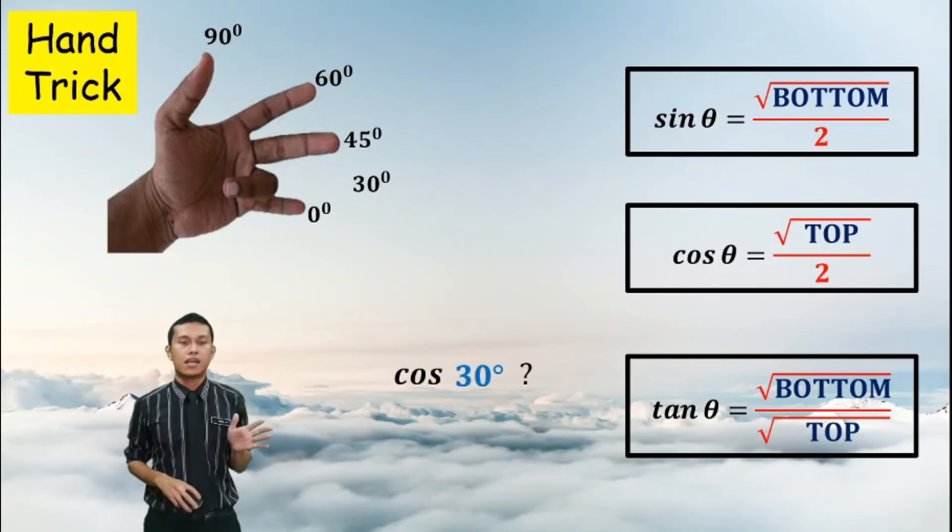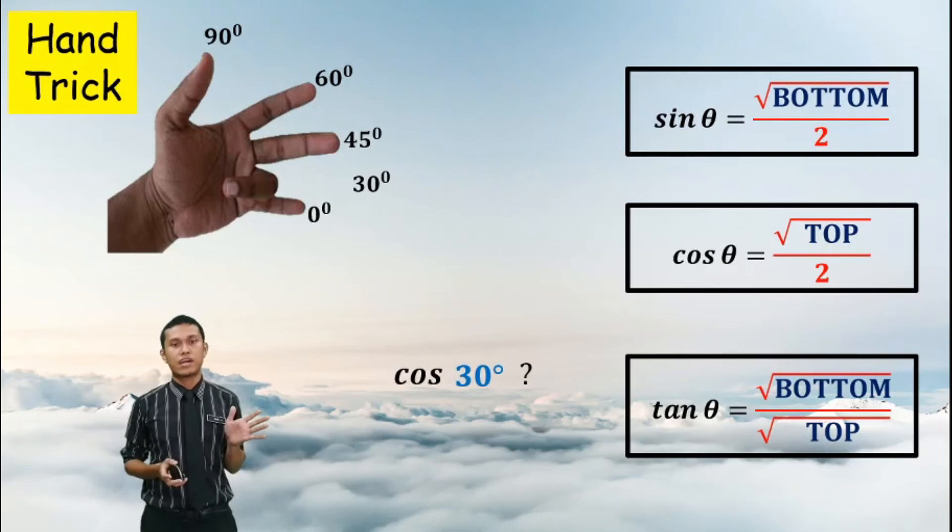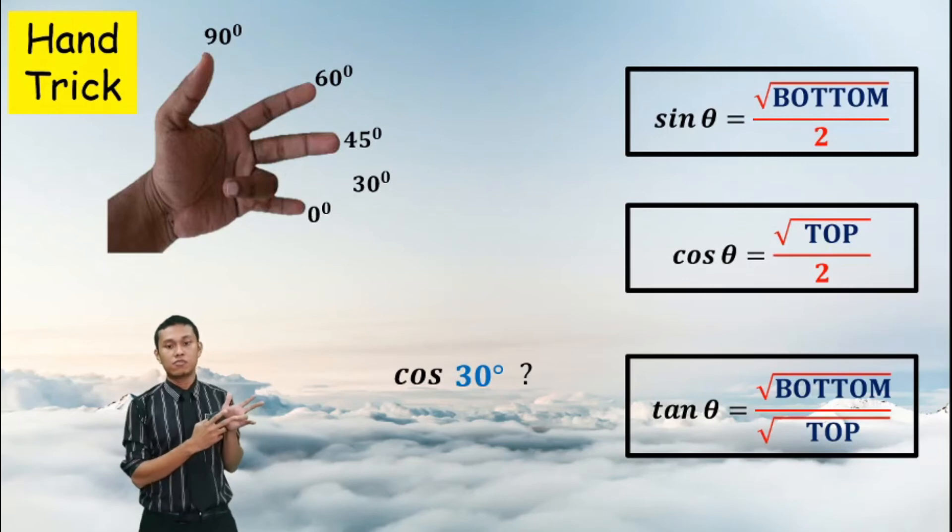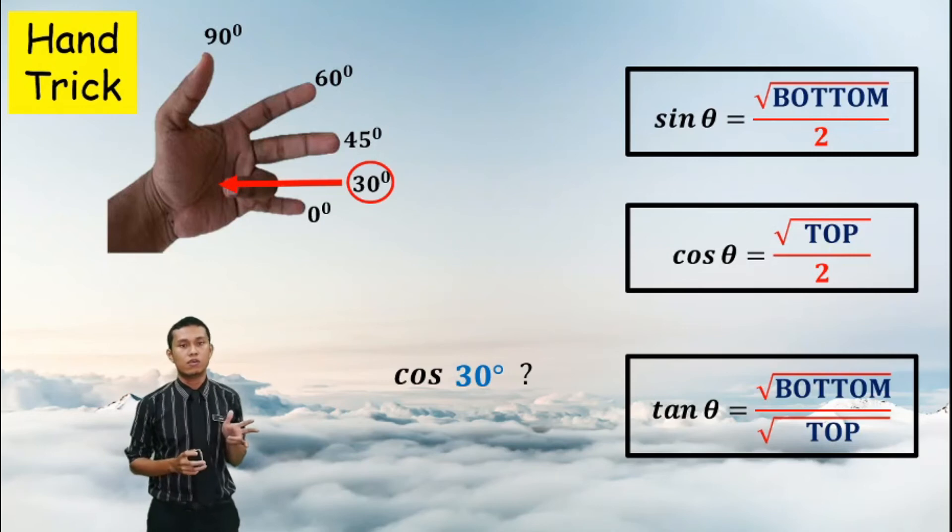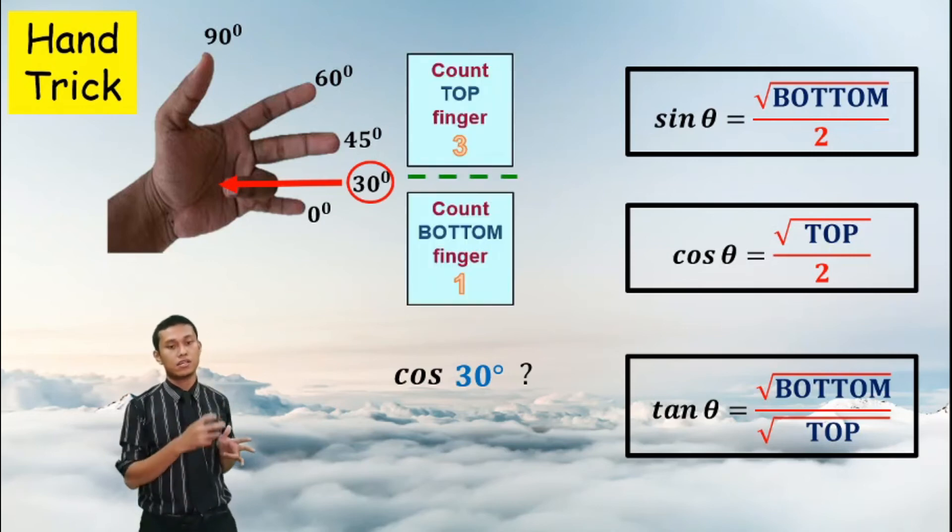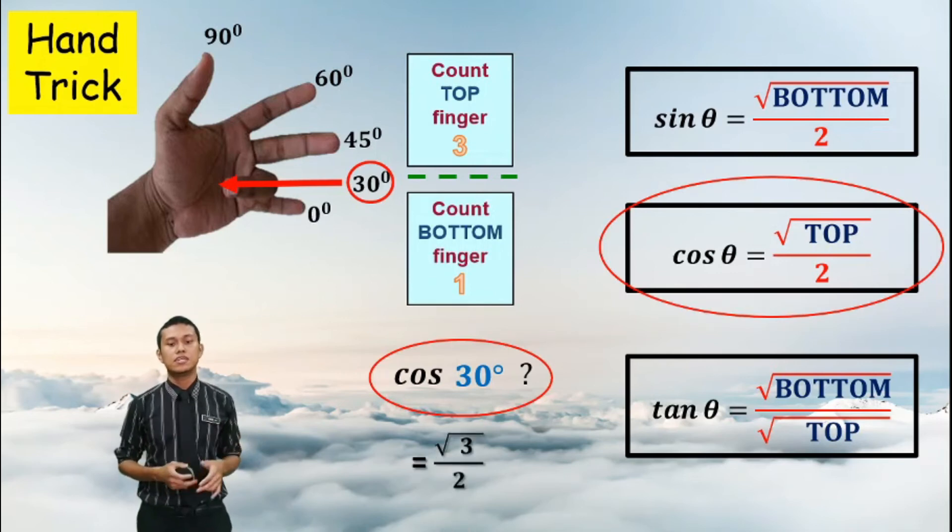So in our question, we are asked to find the value for cos 30 degree. So 30 degree is here, means you need to flip the ring finger here and you notice, you can see that there is three more fingers on top of your ring finger. So by using the formula, you get cos 30 degree is equal to square root 3 over 2. So that is the value. Or you can refer here in the notes given. So cos 30 degree is equal to square root 3 over 2.